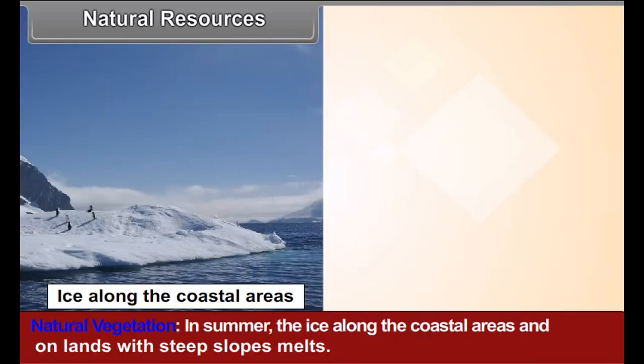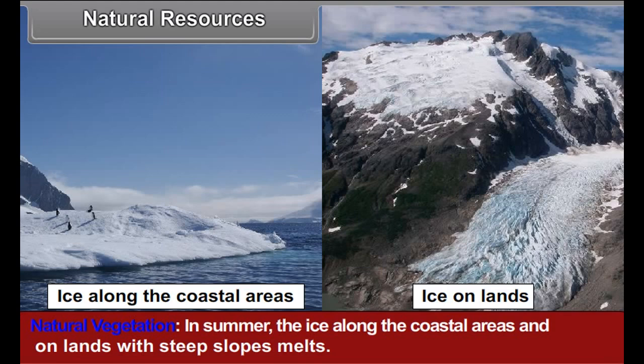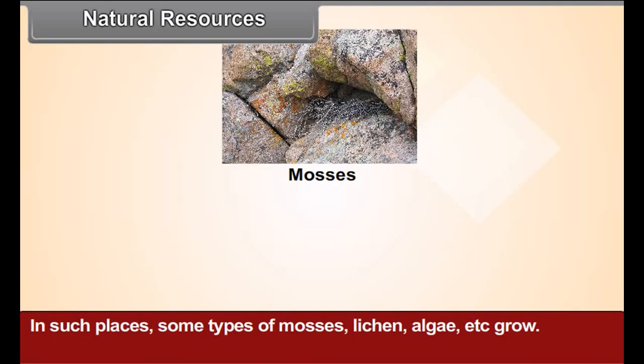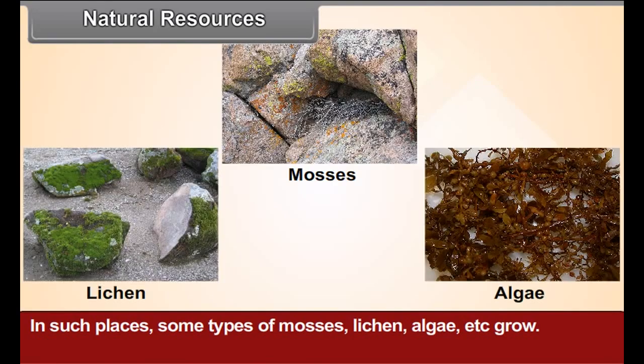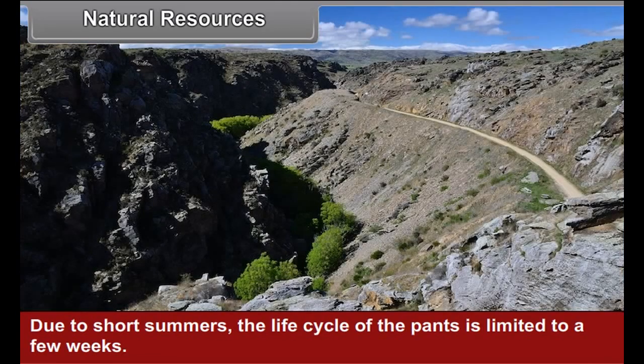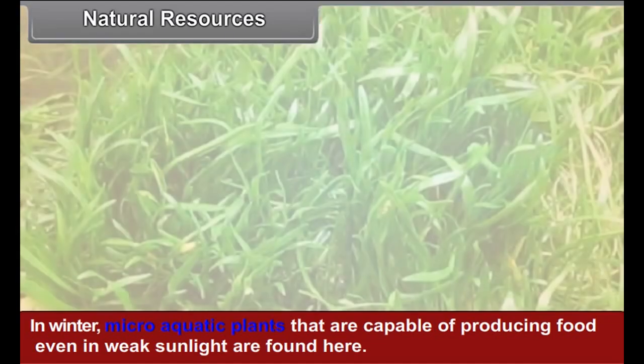Natural Vegetation: In summer, the ice along the coastal areas and on lands with steep slope melts. In such places, some types of mosses, lichen, algae, etc. grow. Due to short summers, the life cycle of the plants is limited to a few weeks. In winter, micro-aquatic plants that are capable of producing food even in weak sunlight are found here.